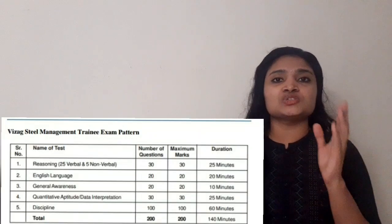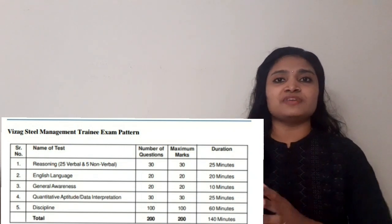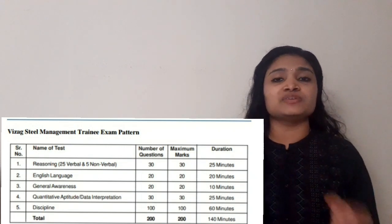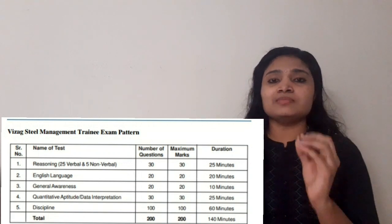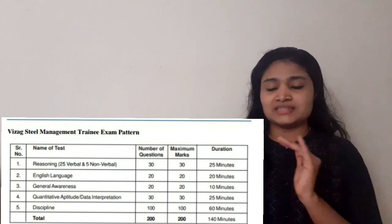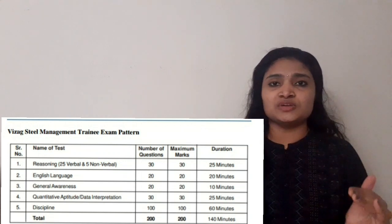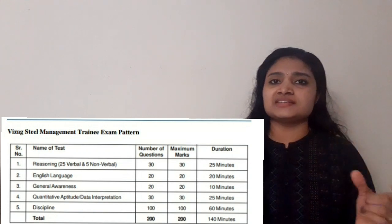First we are going to see the exam pattern — which areas you have to prepare and what marks and time are allotted. The first area is Reasoning. There are a total of 30 questions: 25 verbal and 5 non-verbal questions. The maximum mark allotted is 30 and the time duration is 25 minutes.